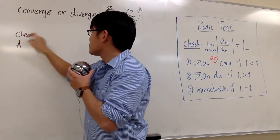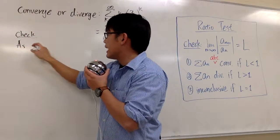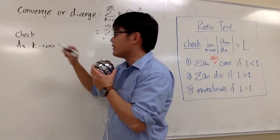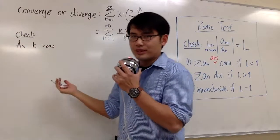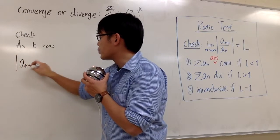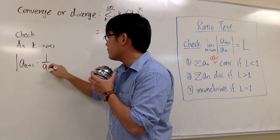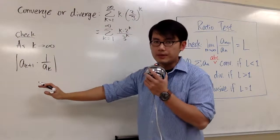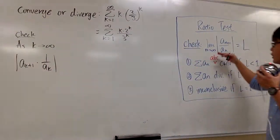We are going to check as k goes to infinity, and then we are going to put on this expression here: absolute value of a_(k+1) times 1 over a_k.